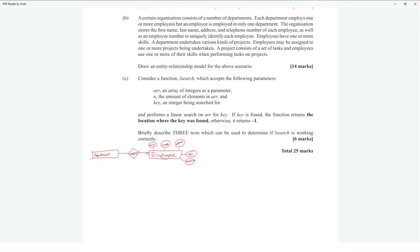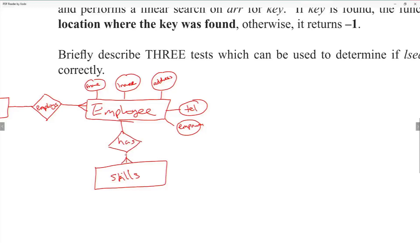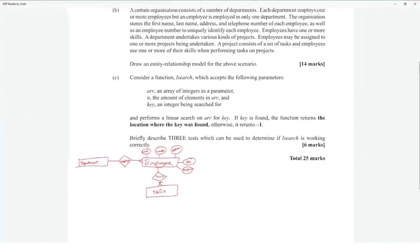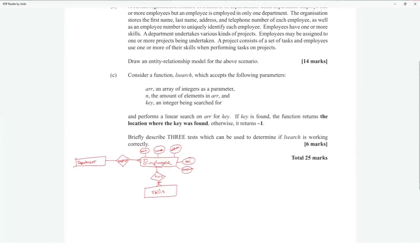Employees have one or more skills — skills being its own entity is a bit unusual, but we use 'employee has one or more skills,' placing the one-or-more line on the relationship.